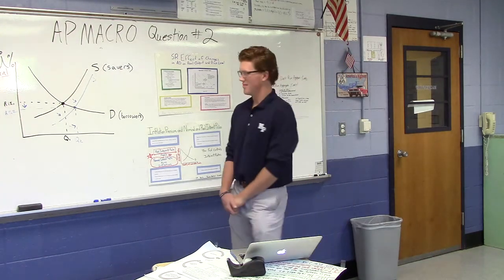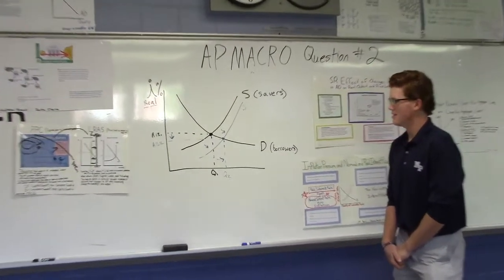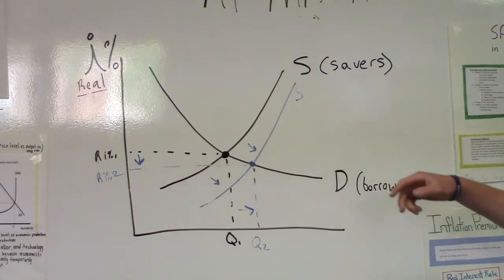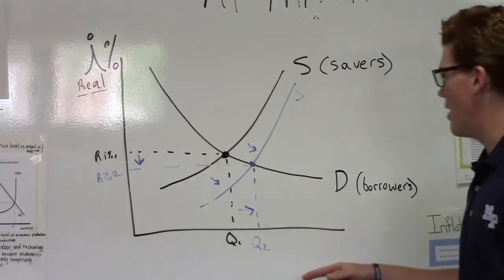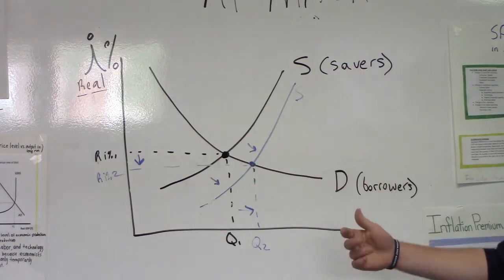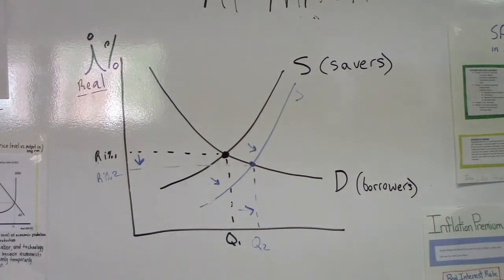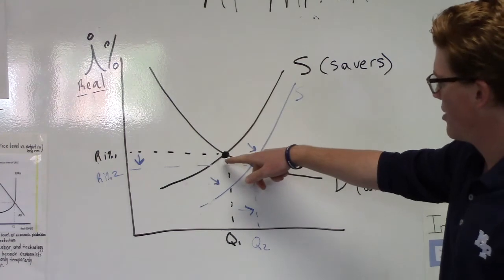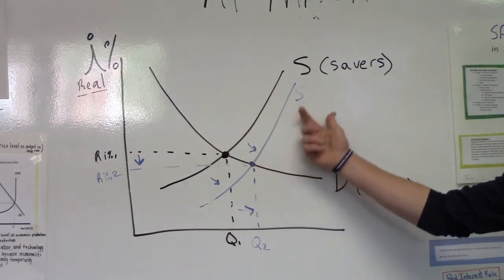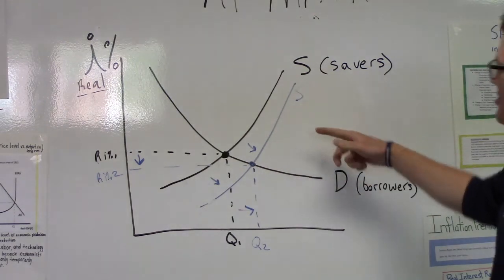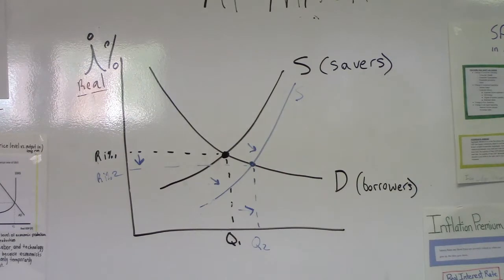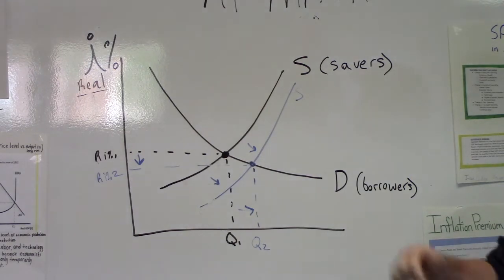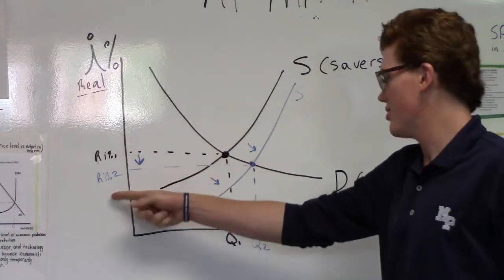Part B: draw a correctly labeled graph of the loanable funds market and show the effect of the change in private savings on the equilibrium real interest rate. The Y-axis is the real interest rate and the X-axis is quantity. Supply is upward sloping — those are the savers — and demand is downward sloping — those are the borrowers. Because of the decrease in tax, savings increase, so the supply curve shifts to the right, which lowers the real interest rate and increases quantity.